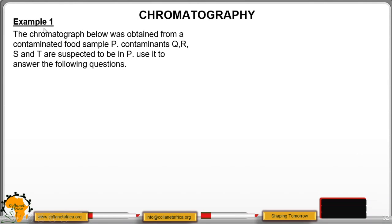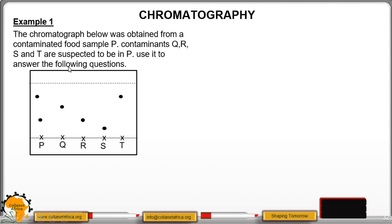Example 1: The chromatogram below was obtained from a contaminated food sample P. Contaminants Q, R, S, and T are suspected to be in P. Use it to answer the following questions. So we have P, which is the contaminated food sample.